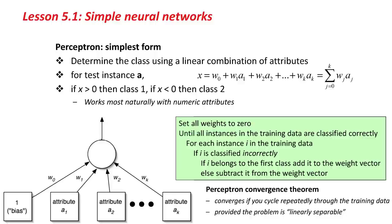The perceptron is a simple learning method that determines the class in a two-class dataset using a linear combination of attributes. For a test instance with attributes a1, a2, a3, we take the sum w0 plus w1·a1 plus w2·a2 and so on over all the attributes — expressed as sigma from j equals 0, implicitly defining a0 as 1 to make the notation nice. If the result x is greater than 0, then we say that instance belongs to class 1; otherwise, we say it belongs to class 2. This works most naturally with numeric attributes. The big question is: where do the weights come from? You have to learn them.